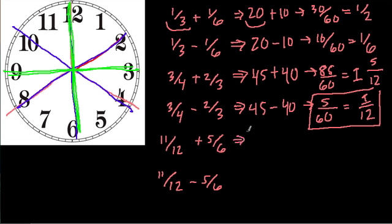Eleven twelfths, well, I'm not going to draw 12 lines here, but if we cut 60 in 12 pieces, each one would be five minutes, and that's what we're establishing right here, that one twelfth is five minutes, five out of 60. So eleven twelfths is like 55 minutes, plus five sixths. Well, what did we say before? One sixth is like 10 minutes, so five sixths is 50 minutes. So that's 105 minutes, 105 out of 60.